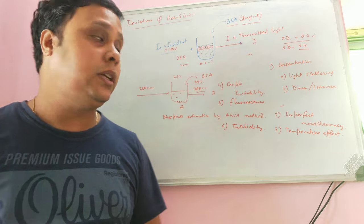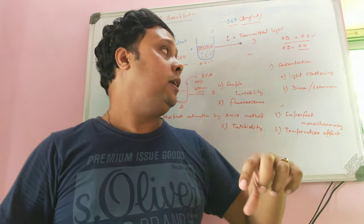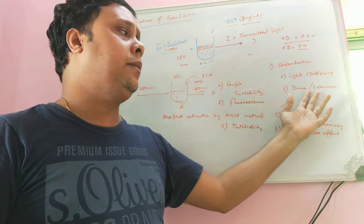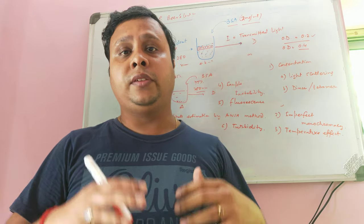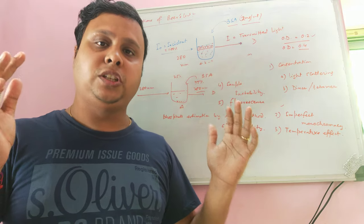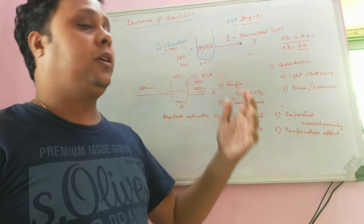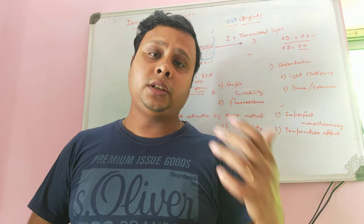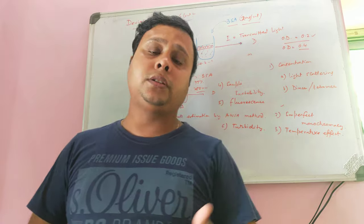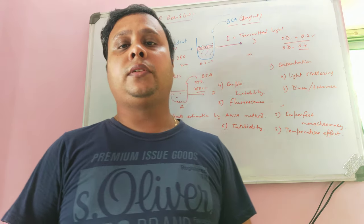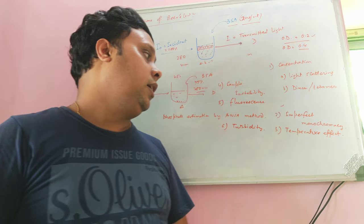In summary, there are six deviations of Beer's Law. First, concentration — at high concentration, molecules may form dimers, trimers, or tetramers, and light scattering may also occur; at low concentration, proteins may denature and absorb more. Second, imperfect monochromacy — if the monochromator sends more than one wavelength to the sample, deviations occur. Third, the temperature effect — heating a sample to develop color and then cooling before OD measurement may alter the color intensity.